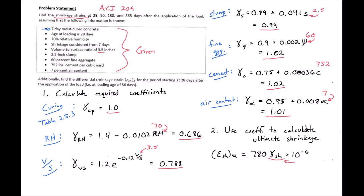Our total shrinkage factor of 0.562. Then when we take our 0.562 times our 780, we'll get an ultimate shrinkage of 439 times 10 to the negative 6. So this here is our ultimate shrinkage.